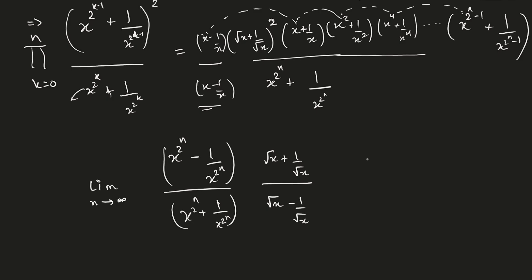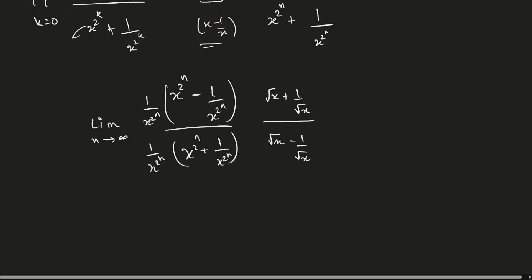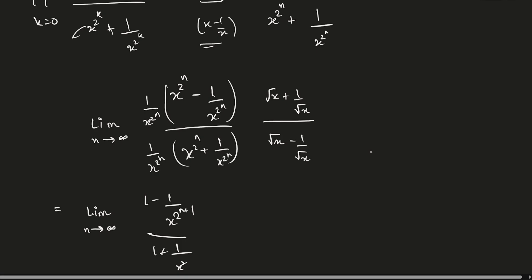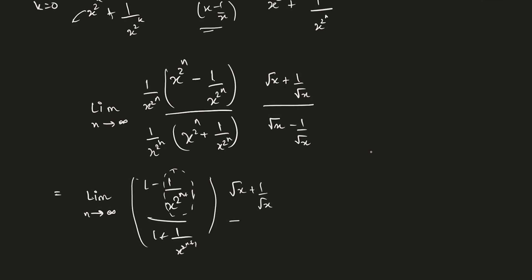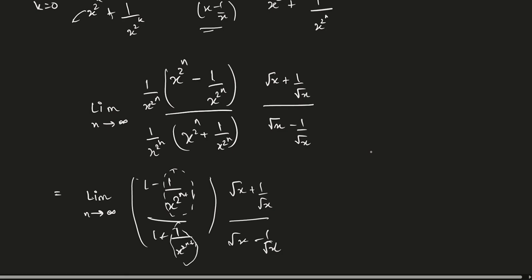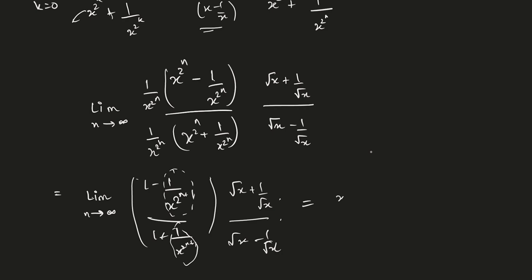Since x > 1, we have something greater than 1 raised to the power infinity. I divide numerator and denominator by x^(2^n) — the quantity tending to infinity. This gives limit as n → ∞ of (1 − 1/x^(2^n+1)) / (1 + 1/x^(2^n+1)). Since 1/x^(2^n+1) is a 1/∞ form, it yields 0. So the expression tends to 1/1, and the final answer simplifies to (x + 1) / (x − 1).